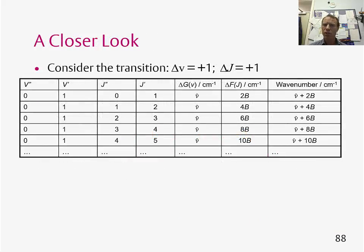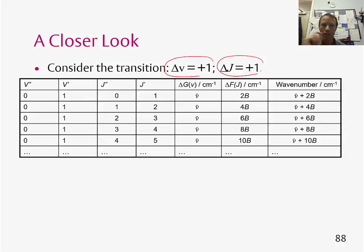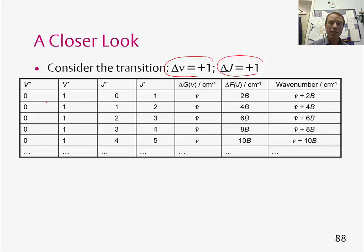Let's have a closer look at the quantum numbers involved and do some calculations to find out where these peaks are coming from. We're going to look at the transition with Δv equals plus 1 and Δj equals plus 1. In the table, the initial vibrational state v double prime equals 0, and the final vibrational state v prime equals 1. We then consider a range of j values: 0 to 1, 1 to 2, 2 to 3, and so on — so Δj equals plus 1.